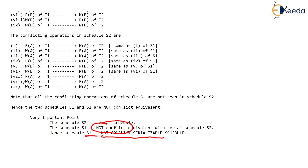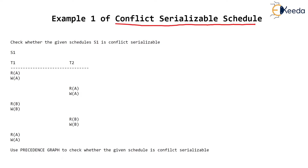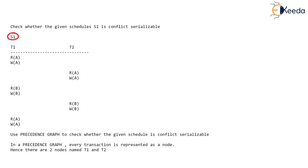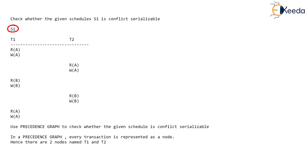S1 is not a conflict serializable schedule in that case. Now in this video, we are given a schedule S1 which is surely a concurrent schedule, because T1 and T2, two transactions, are running concurrently with interleaved operations. And we are asked: is this schedule S1 conflict serializable?